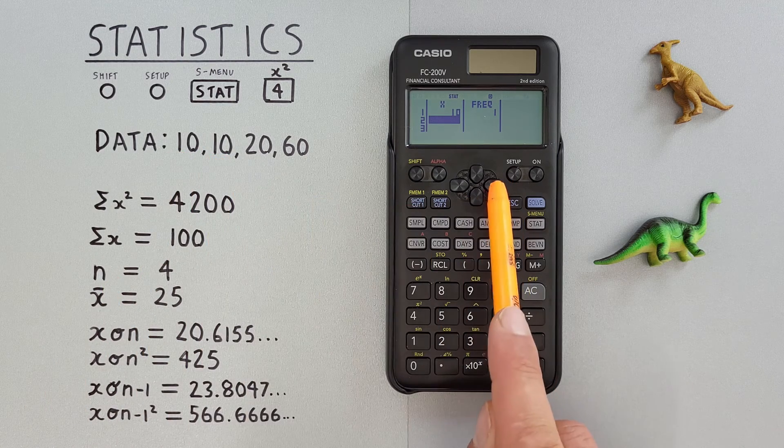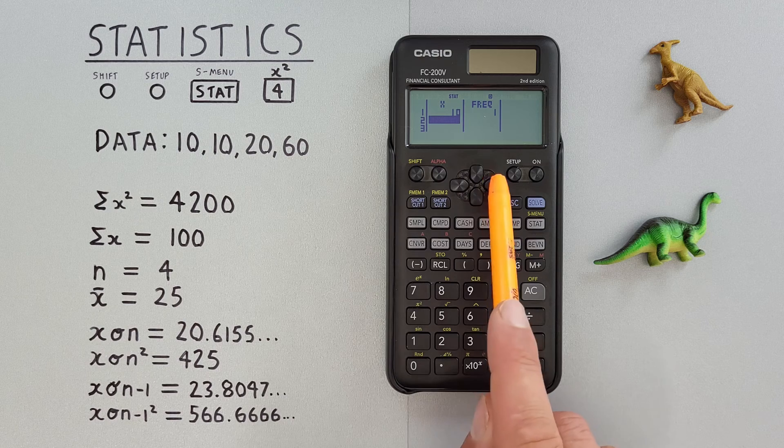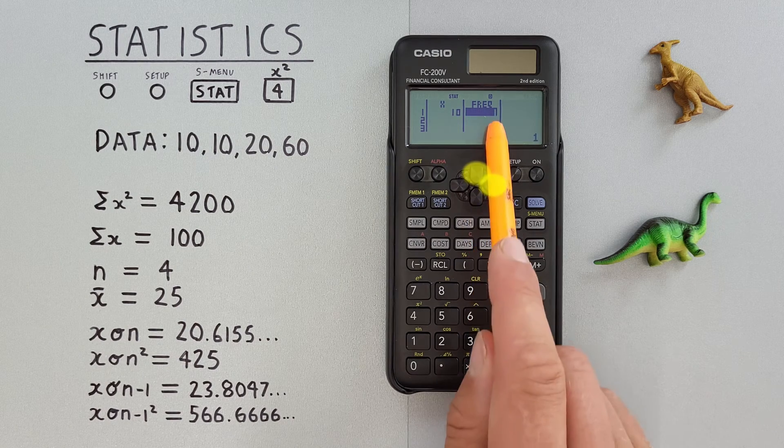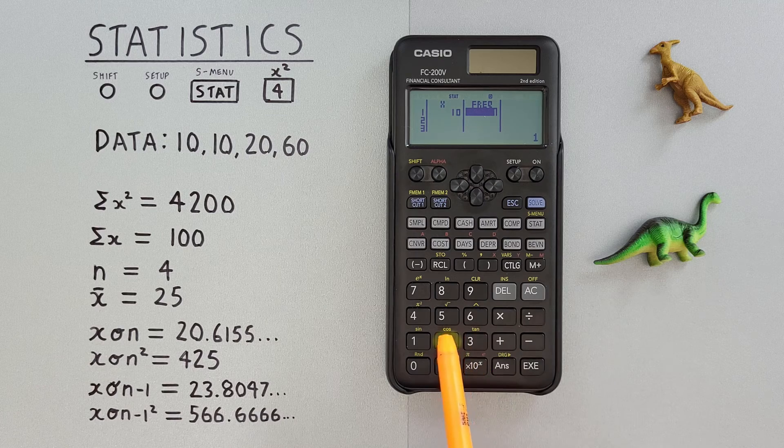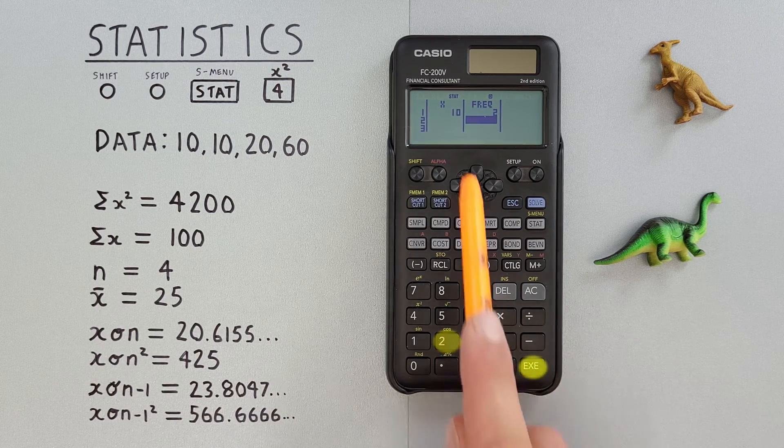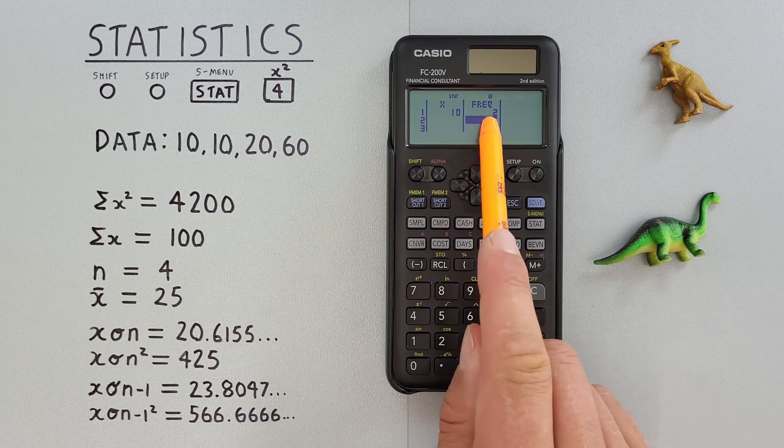But now, since we have multiple 10s, instead of entering that 10 each time, we can go to our frequency list and tell it that 10 occurs twice. So we press two there. There we go, we have 10 twice.